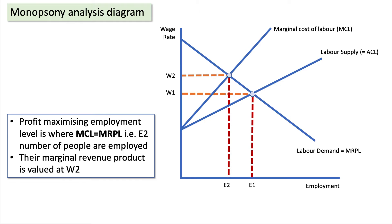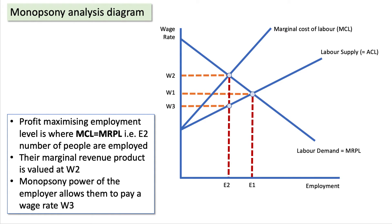Let's work through the monopsony analysis diagram. We assume a profit-maximising employer with a downward-sloping labour demand curve of the marginal revenue product of labour. The average cost of labour rises as they bid the wage up to attract extra workers, and if the average cost is rising, the marginal cost of labour increases at a faster rate, assuming you have to pay all workers any increment to the wage.